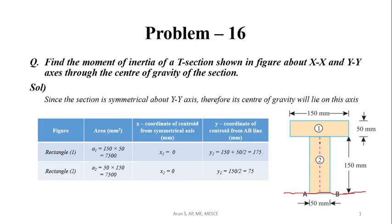We will construct a table with columns for: figure, area in square millimeters, X-coordinate of centroid from the symmetrical axis, and Y-coordinate of centroid from the AB line. For rectangle one — the top rectangle — the area is 150 × 50, which equals 7,500 mm².